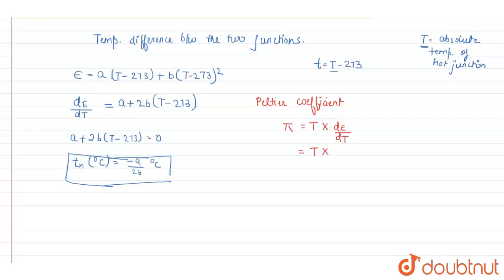And what is the value of T? How we can find that? We can find that with this formula. Let us convert this, that is t is equal to T minus 273. So that will be t plus 273 into a plus 2bt.